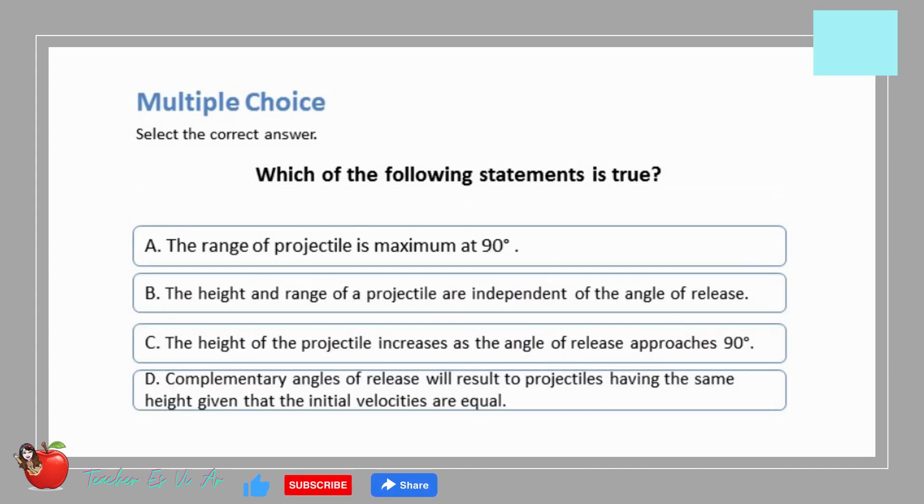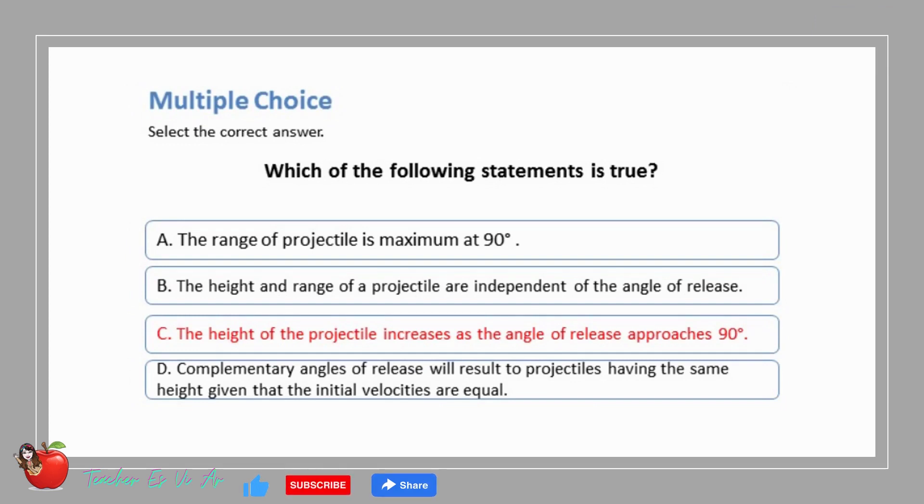Multiple choice, select the correct answer. Which of the following statements is true? A. The range of projectile is maximum at 90 degrees B. The height and range of a projectile are independent of the angle of release C. The height of the projectile increases as the angle of release approaches 90 degrees D. Complementary angles of release will result to projectiles having the same height given that the initial velocities are equal. The correct answer is C. The height of the projectile increases as the angle of release approaches 90 degrees.